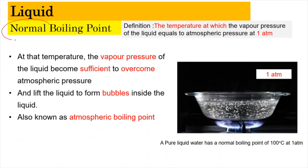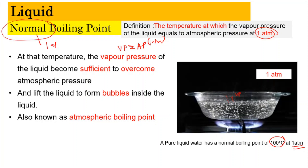Now we look at the normal boiling point. The normal boiling point has the same definition as the boiling point, but it happens at 1 atm, which is the atmospheric pressure at Earth's surface. At this condition, when the vapor pressure equals the atmospheric pressure of 1 atm, the liquid has sufficient energy to overcome the atmospheric pressure, forming bubbles and releasing vapor. For pure liquid water, the normal boiling point is 100°C at 1 atm. The key point: the normal boiling point only occurs at 1 atm.